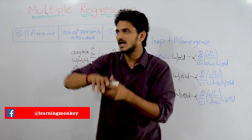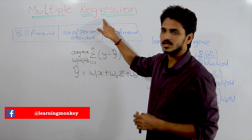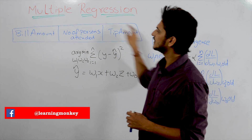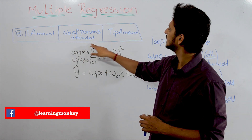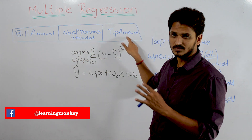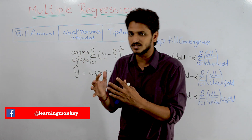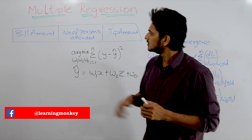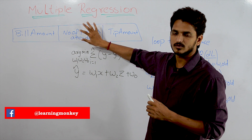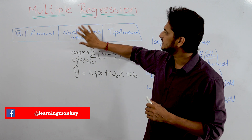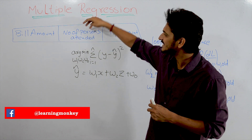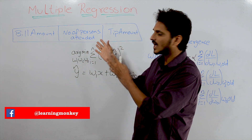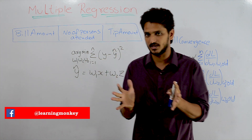Let's take a dataset: bill amount, number of persons attended, and tip amount. We already discussed this dataset in our previous class on planes and hyperplanes. This dataset has three columns, so we represent this data in a three-dimensional coordinate space.